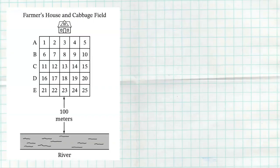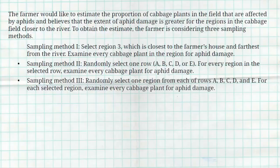Each region has approximately the same number of cabbage plants. So here is that diagram. We have the farmer's house at the top, we got row A, B, C, D, E, five regions in each filled with roughly the same amount of cabbage plants, and we notice that bottom is 100 meters from the river.